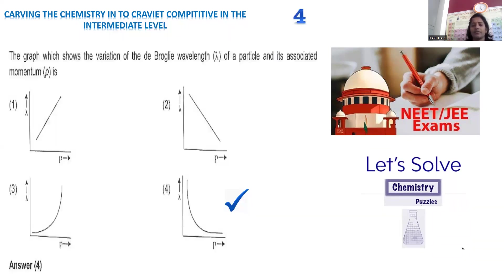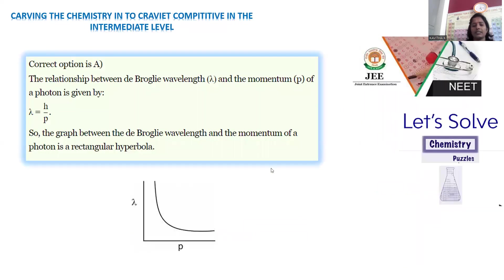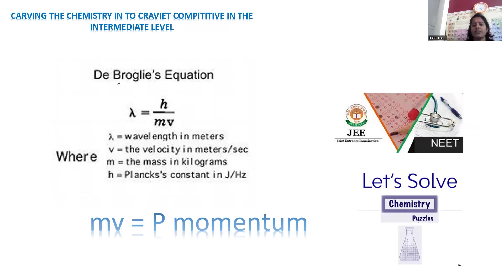Let's move on to question number 4, from atomic structure, where the dual nature of electrons given by de Broglie is involved. The question asks: which graph shows the variation of de Broglie wavelength of a particle with its associated momentum? The correct plot is in option number 4 — a curvature called a rectangular hyperbola. The de Broglie equation is: λ = h/mv, where h is Planck's constant, m is the mass of the electron, and v is the velocity in meters per second.